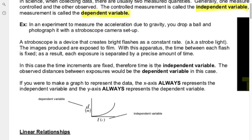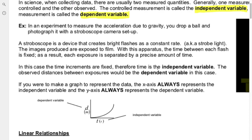Another important idea about correlation: just because two things are correlated doesn't necessarily mean there is a causal relationship. What we mean is that just because two things look related, it doesn't mean that one caused the other or vice versa. You need more evidence for that. You can have a correlation, but you don't know if it's necessarily a causal link.